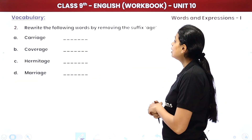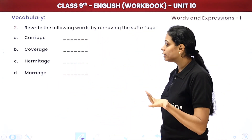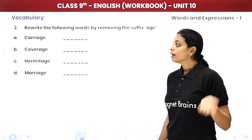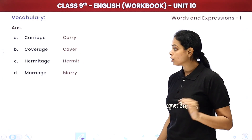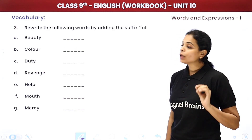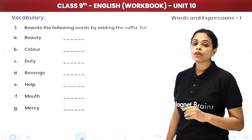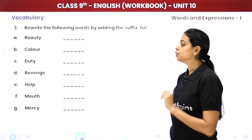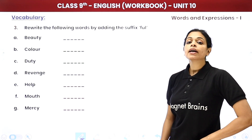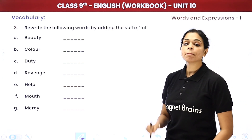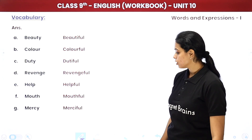Next vocabulary exercise: if we remove the suffix from these words, what is the root word? Carriage becomes carry, coverage becomes cover, hermitage becomes hermit, marriage becomes marry. Then rewrite the following words by adding the suffix '-ful': beauty becomes beautiful, colour becomes colourful, duty becomes dutiful, revenge becomes revengeful, help becomes helpful, mouth becomes mouthful, and mercy becomes merciful.